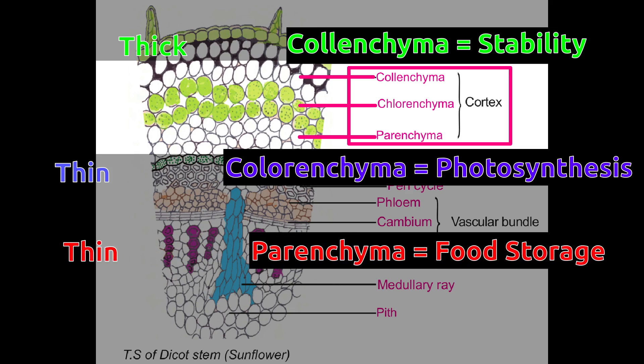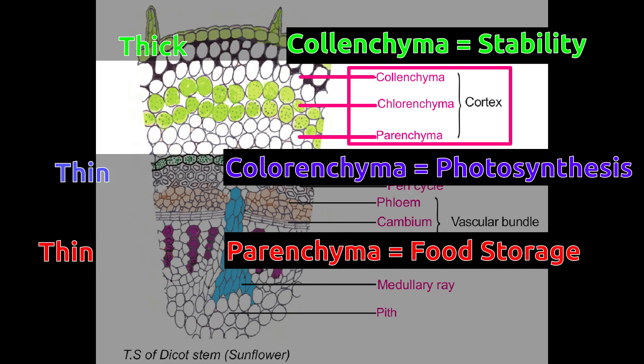Parenchyma is the inner part of cortex. It is also a thin-walled layer. It stores food prepared by photosynthesis.